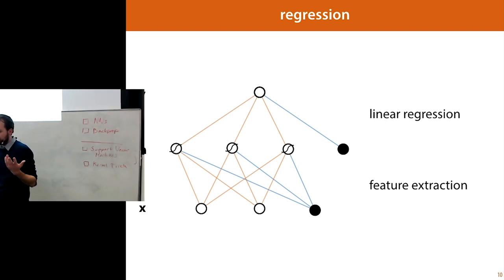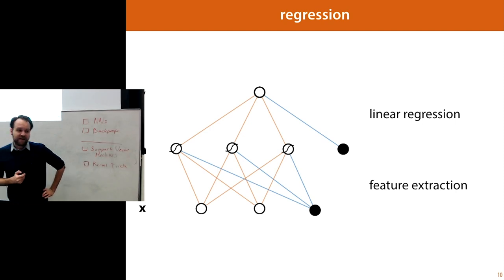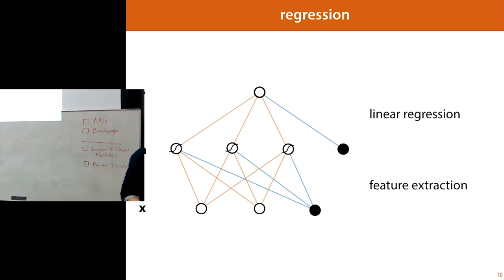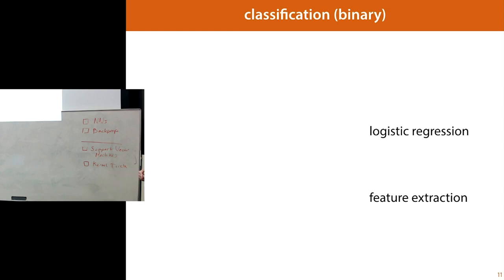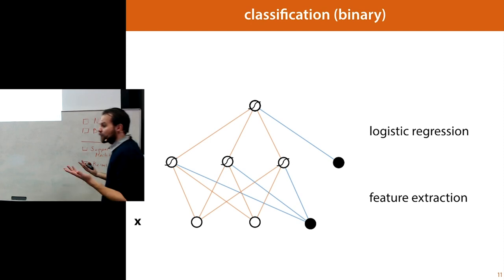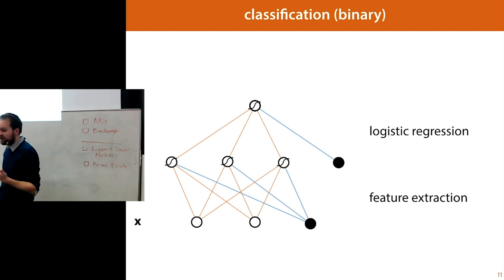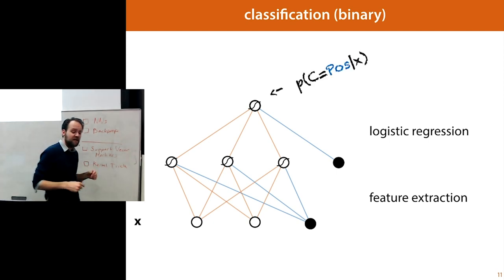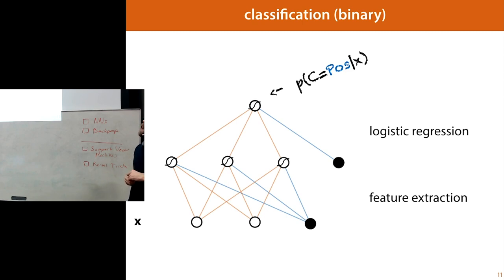We'll see in a bit how we train the whole thing in one go. For classification, the simplest way is to make the top part a logistic regression — just sticking a sigmoid activation on top of it. Now the output is a value between zero and one, which we can interpret as the probability of the positive class, as we saw in the last lecture.